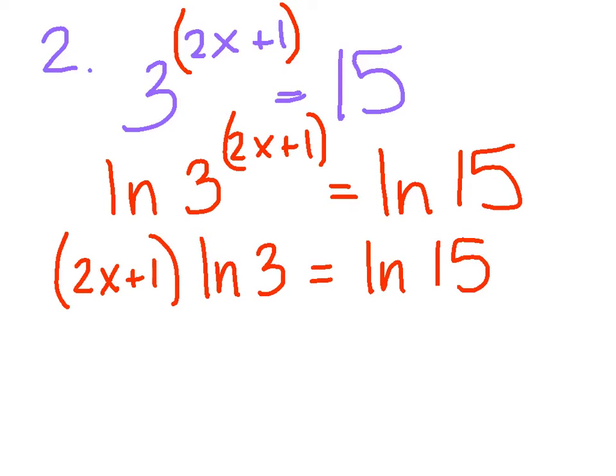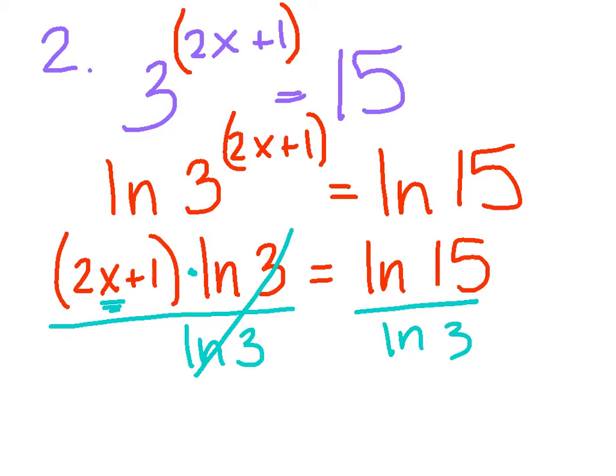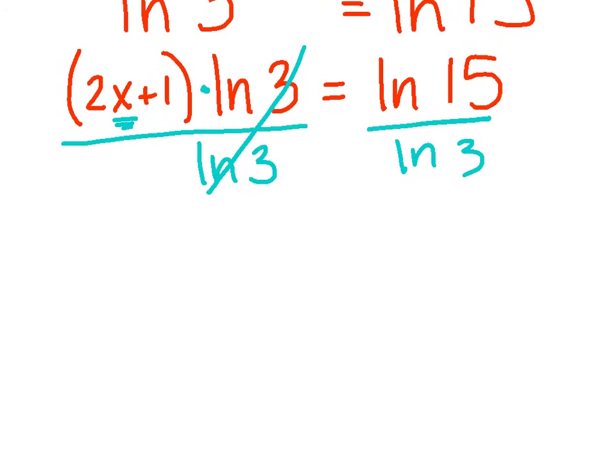Using my log property 3, I'm going to bring that exponent down in front. 2x plus 1, notice it's still in parentheses, ln of 3 equals the ln of 15. Now as I read this out loud, it's this quantity times the ln of 3. So I'm going to divide both sides by the ln of 3.